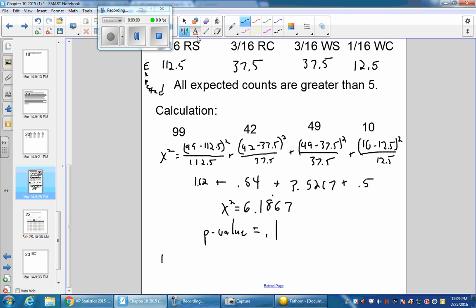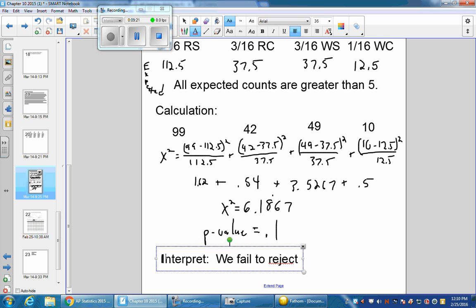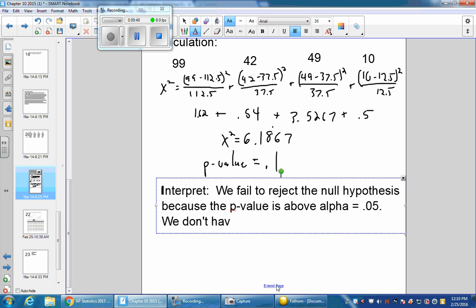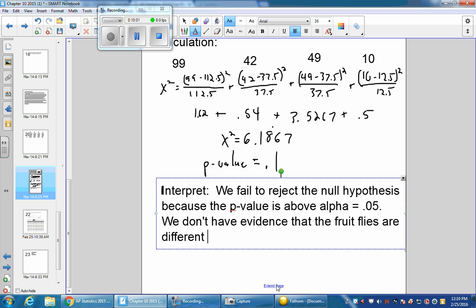Now let's interpret this. We fail to reject the null because the p-value is above alpha equals 0.05. We have, or we don't have evidence that the fruit flies are different from our expected proportion. And that's a chi-squared goodness-of-fit test.